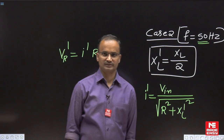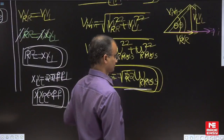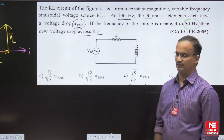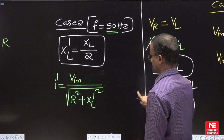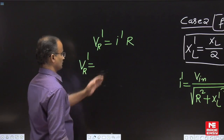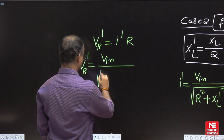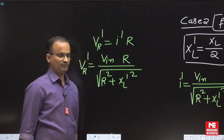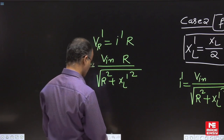When the current changes, obviously the voltage across the resistance also changes. All the options are given in terms of URMS. We need the voltage across the resistance, so I' must be replaced by its corresponding mathematical expression. To express the final answer in terms of URMS, we can use our Case 1 relations.